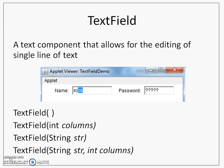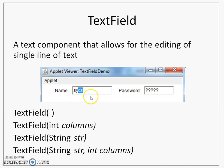Let's look at the first one, that is text field. Text field will help you to create a component where you can enter some text as well as edit that text, and it will help you to only edit a single line of text. You see two examples here — one is a text field used for taking a name, another one for taking the password. Editing of the text means you can cut, copy, and paste the text.